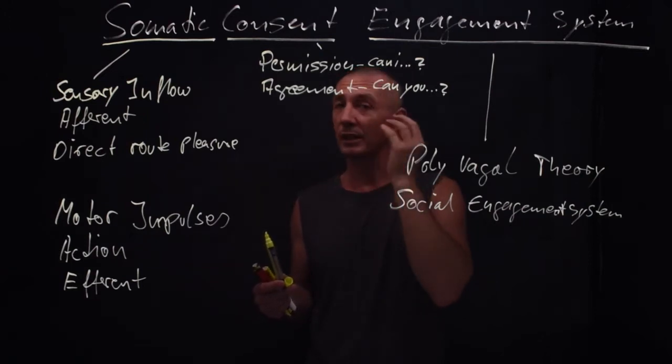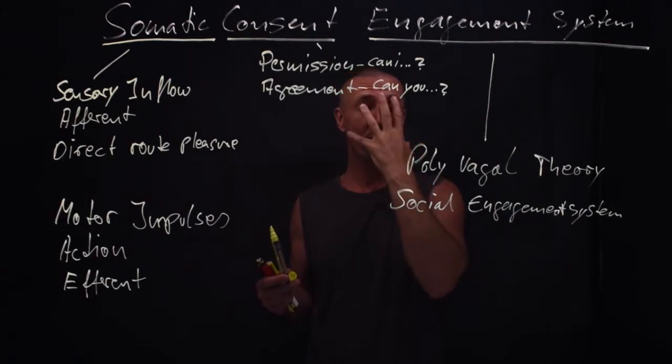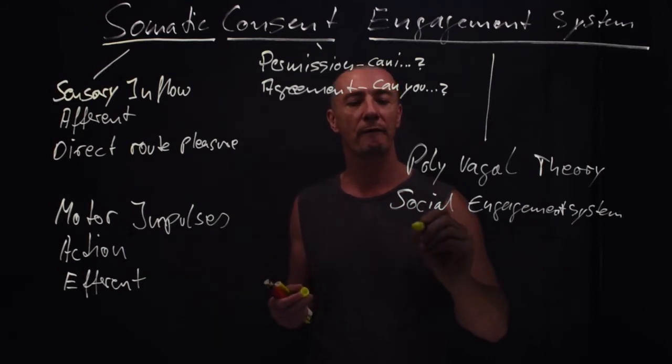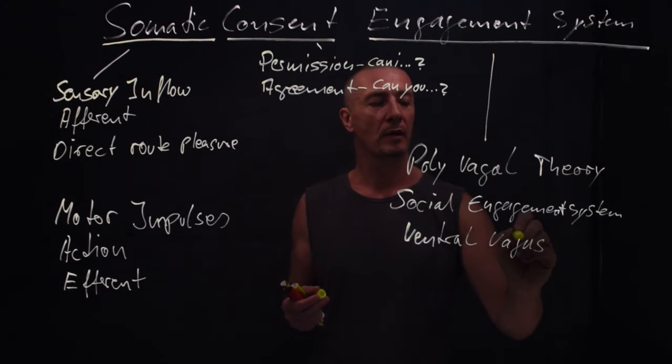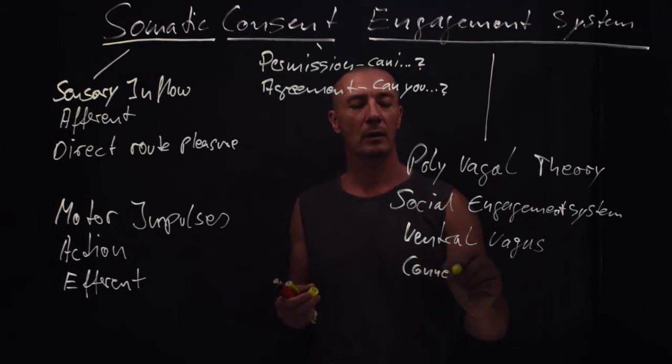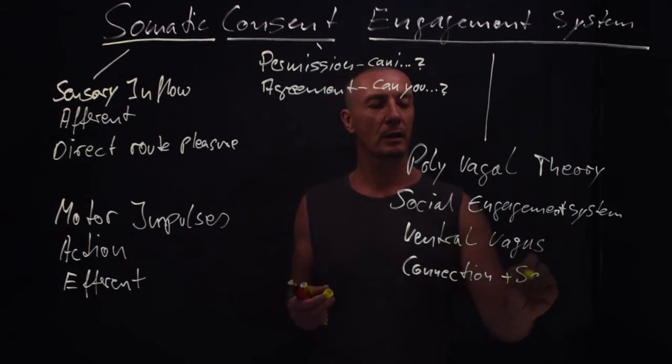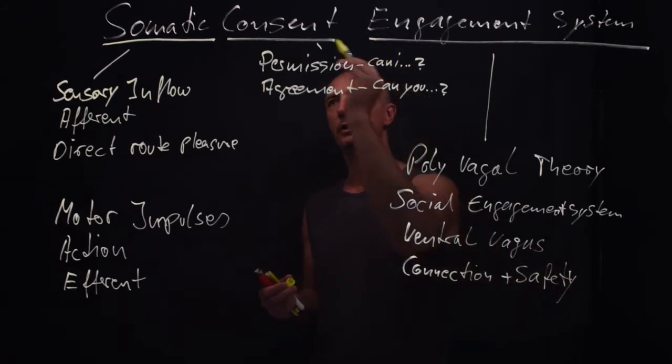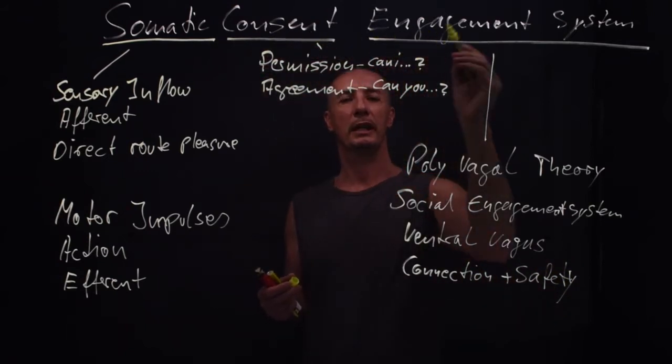how you hear, how you see, your facial expression to engage with other mammals. It is your ventral vagus complex. And it's everything that is related to connection and safety. That is the somatic consent engagement system.